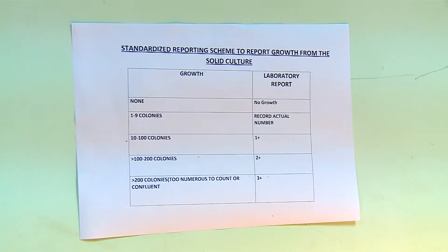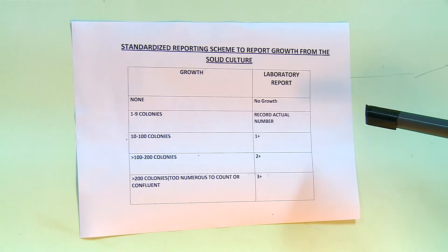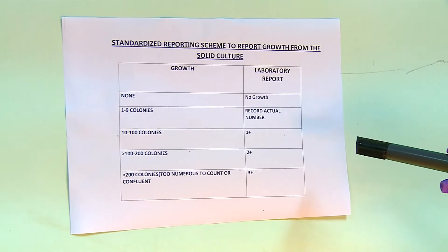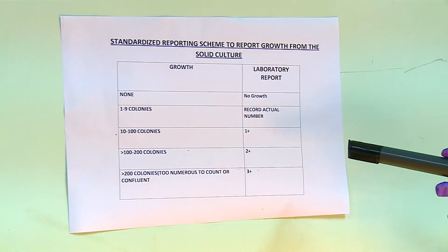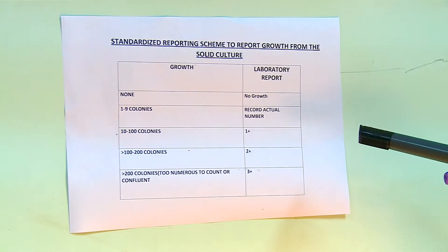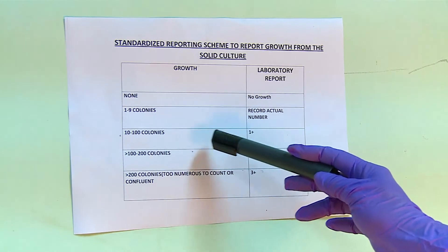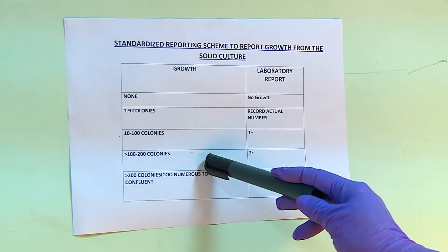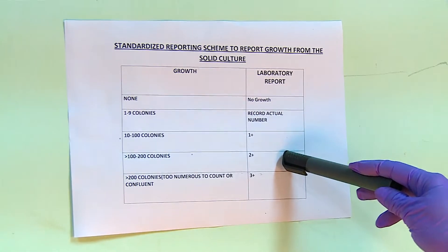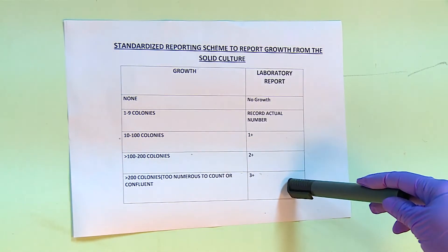The positive growth is taken and it is graded using the WHO IUATLD recommendation. When no growth is seen it is recorded as no growth. When 1 to 9 colonies are seen, the actual number is recorded. When 10 to 100 colonies are seen it is recorded as 1+. Between 100 and 200 colonies it is recorded as 2+. If more than 200 colonies or a sheet of growth is seen, then it is recorded as 3+.